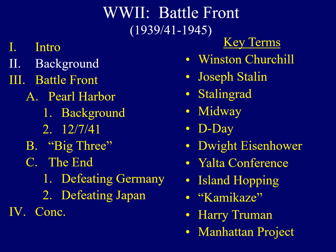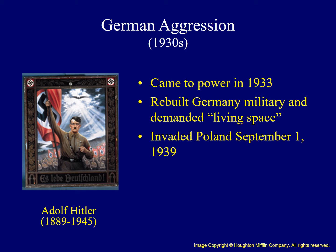We will begin with some background to World War II. The prelude to the Second World War came with several acts of aggression undertaken by Germany under Adolf Hitler. Hitler came to power in Germany in 1933, at almost the same time Franklin Roosevelt did in the United States. He immediately rebuilt the German military and demanded living space for Germany, particularly in Eastern Europe. After securing German authority in Austria and Czechoslovakia, Hitler set his sights on Poland and invaded Poland on September 1, 1939. This began the fighting in World War II.